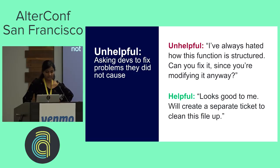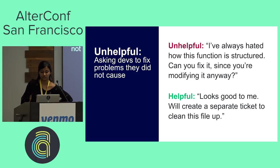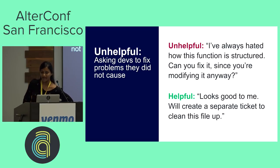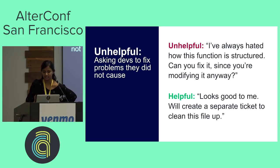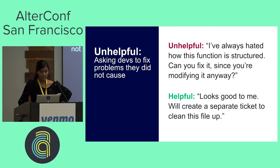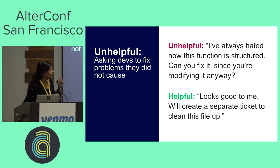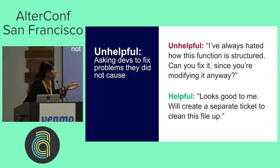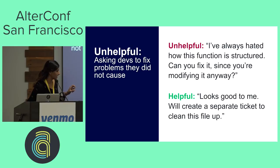Avoid asking developers to solve problems that aren't related to their change set or the problem their change set is trying to solve. Even if someone is extending or modifying a messy part of the code that is rife with bad practices, don't hold this review seeker hostage and force them to fix these issues while they're at it. If you see issues not directly related to a person's change set, make it a separate discussion. For example, instead of saying 'I've always hated how this function is structured, can you fix it since you're modifying it now anyway,' you could say 'looks good to me — I'm going to create a separate ticket to clean this file up later.'